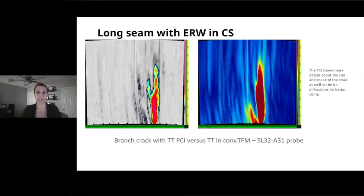Another example here for long seam ERW in carbon steel as well. Here, it's a branch crack using TT. This is the conventional TFM and the phase coherence. Again, it shows a bit more details about the size and the shape also of the crack and the tip diffractions for a better sizing.